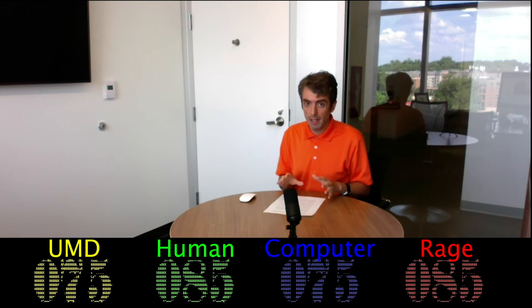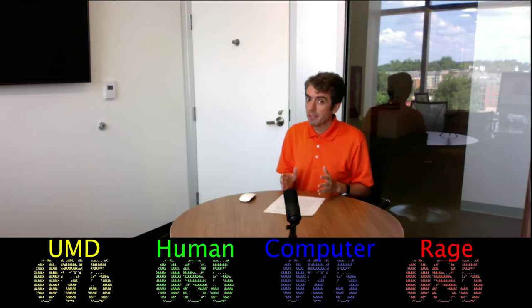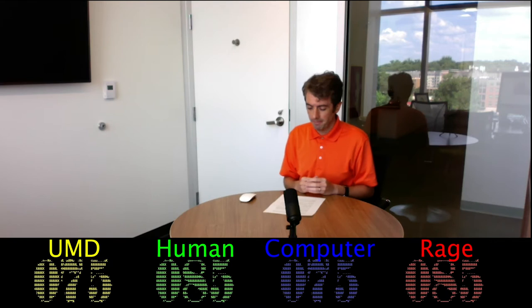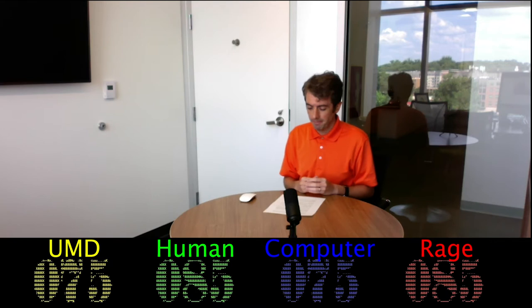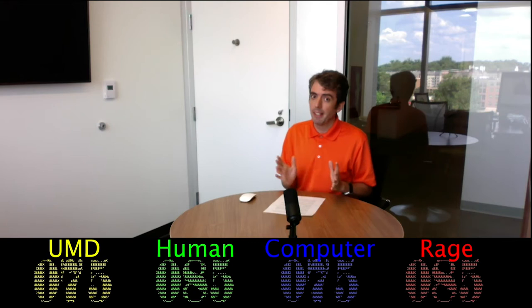Toss-up 20 and then we'll take a break for the half. A controversial Donald Trump tweet about this disease stated in all caps, the United States has enough problems. STRIVE is a trial back for a vaccine of this disease whose most significant epidemic occurred between the years of 2013 and 2016. The presence of militia has hindered international efforts to stop an outbreak of this disease which began in Benny in 2018. Ebola. 10 points. At the halfway point, Maryland has gotten more aggressive and it's beating Rage Against the Machines on more of the buzzes. The computer is still playing cautiously, but it's converting all of the incorrect human answers. Both the humans and Rage Against the Machines have a narrow 10-point lead at the halfway point. It's anybody's game.